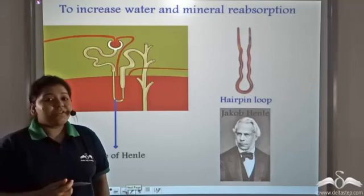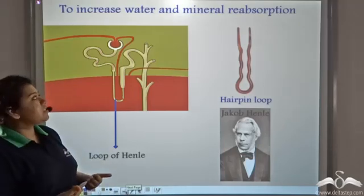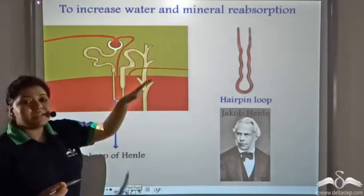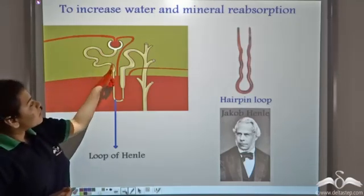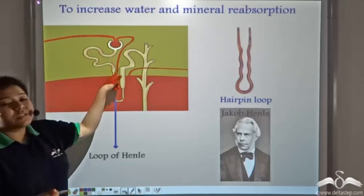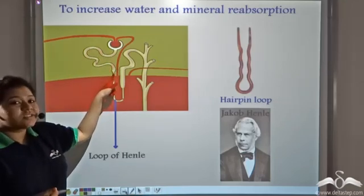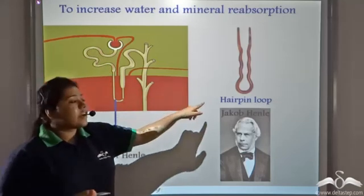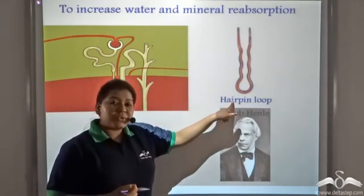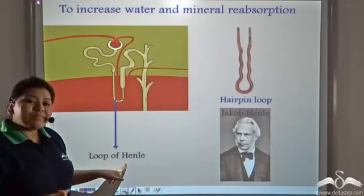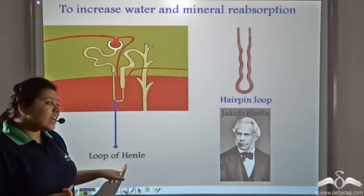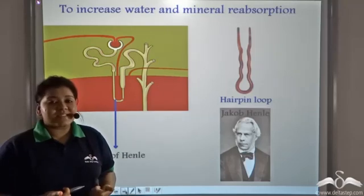Now for the greater reabsorption of water and minerals, there is another structure post the proximal convoluted tubule. And this structure looks like a hairpin loop and is known as the loop of Henle after the famous scientist Jacob Henle who first discovered this.